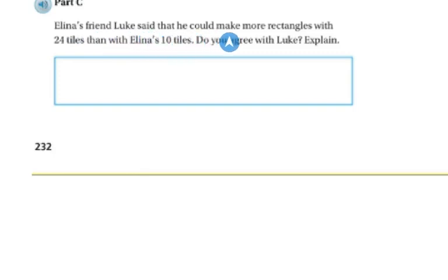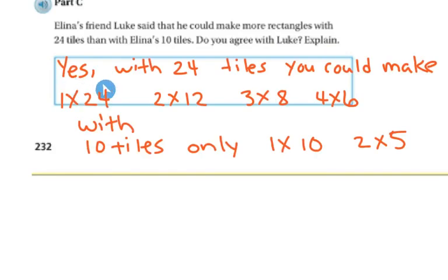Elena's friend Luke said that he could make more rectangles with 24 tiles than with Elena's 10 tiles. Do you agree with Luke? So the answer is yes, because with 24 tiles, you can make a rectangle with 1 times 24. You can make a 2 times 12, a 3 times 8, and a 4 times 6. But with 10 tiles, you can only make a 1 times 10 or a 2 times 5.